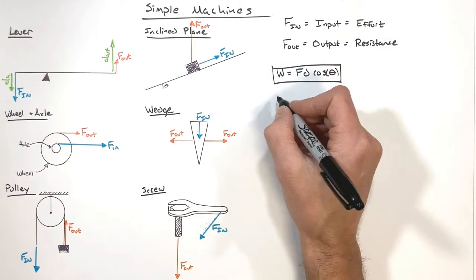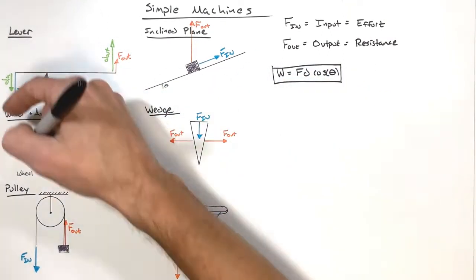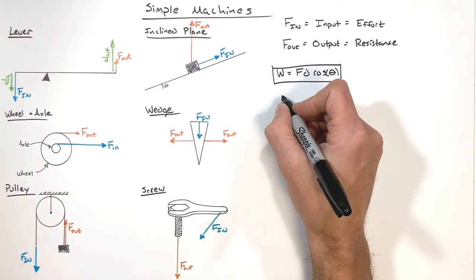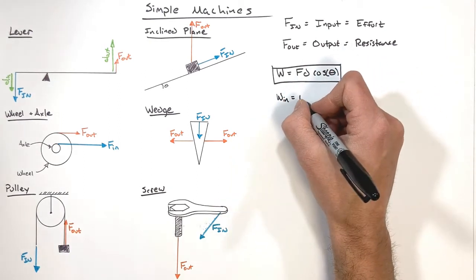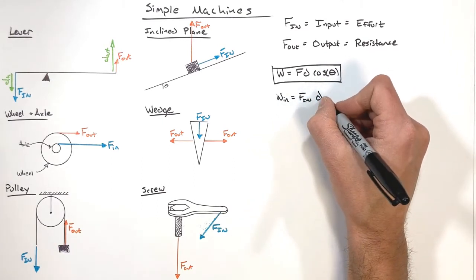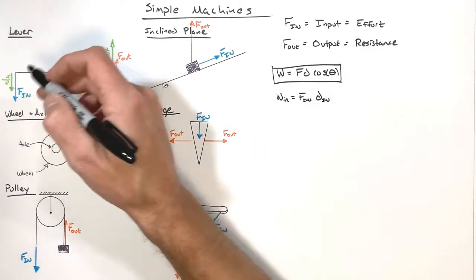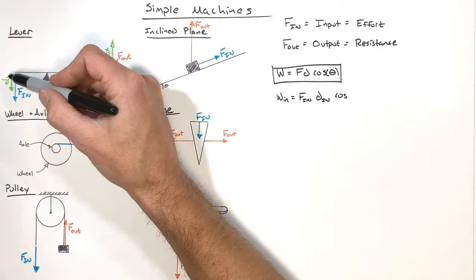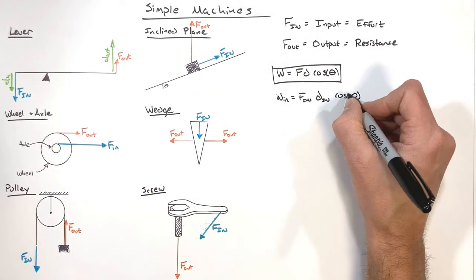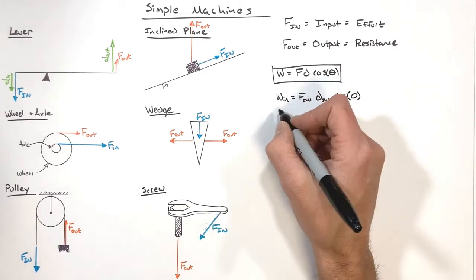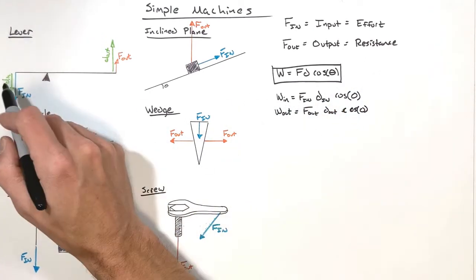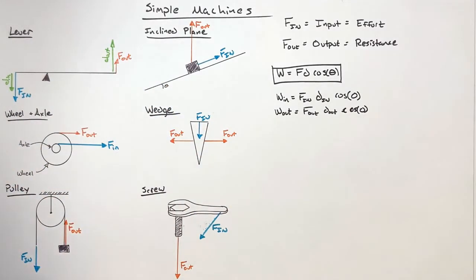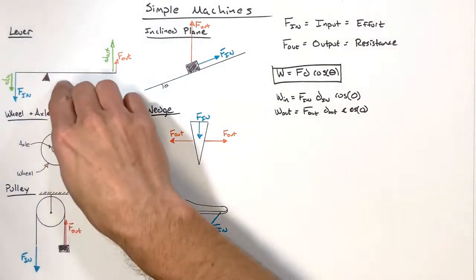Applying the work formula to the lever: if we push on this lever, we're doing work on it and giving it energy. The work in is going to be the force-in times the displacement of the input side times the cosine of the angle between them. Because the displacement is down and the force is down, that angle is zero degrees. We see a similar situation on the output side. Ultimately there is some work in and some work out — we're putting energy into the system and energy comes out.